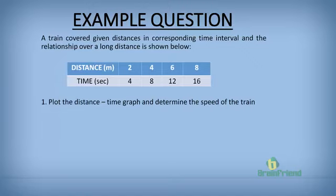Here is a simple example. A train covers given distances in corresponding time intervals: 2 meters in 4 seconds, 4 meters in 8 seconds, 6 meters in 12 seconds, and 8 meters in 16 seconds. We are to plot the distance-time graph and determine the speed of the train.